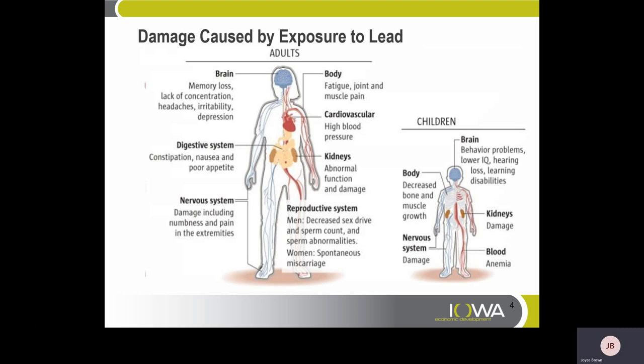Damage caused by exposure to lead. There is a diagram of an adult and a child, each listed as to how lead exposure can damage organs of the body. In adults, the brain could show memory loss, lack of concentration, headaches, irritability, and depression. In a child, the brain could show behavioral problems, lower IQ, hearing loss, and learning disabilities.